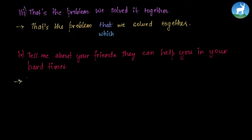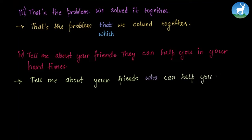'Tell me about your friends. They can help you in your hard times.' We join these two sentences using who, because we're referring to people. 'Tell me about your friends who can help you in your hard times.' Friends are people, hence we use who.